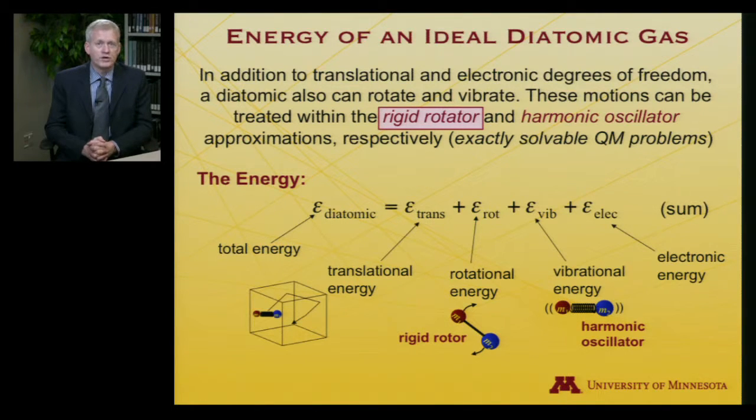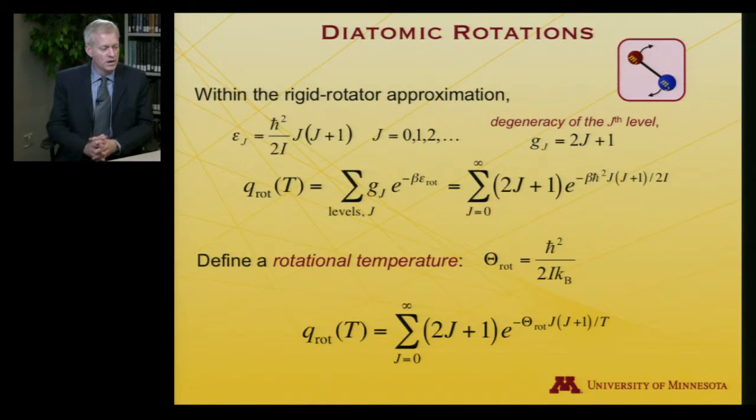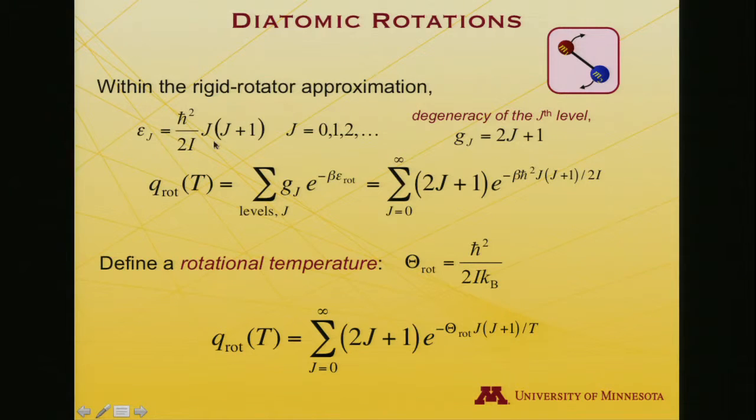In order to compute that energy, we can use the quantum mechanical rigid rotator Schrödinger equation to compute allowed energy levels and degeneracies. As we saw early on in the course, within that approximation, the energies are given by the equation shown here. They depend on a quantum number j, and the quantum number expression j times j plus 1 can range from 0 when j equals 0 to increasingly high integer values. There's a prefactor involving h-bar squared and the moment of inertia of the molecule. The degeneracy of these levels is 2j plus 1.